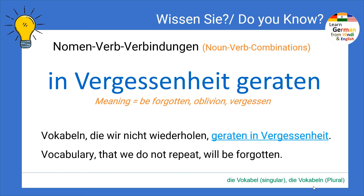I am sure you know the verb Vergessen. In this particular example, Vergessenheit is our noun. As you can see, the first letter is in capital letter. Vergessenheit is our noun, and as the ending is -heit, those nouns which have the ending -heit or -keit are always feminine nouns.